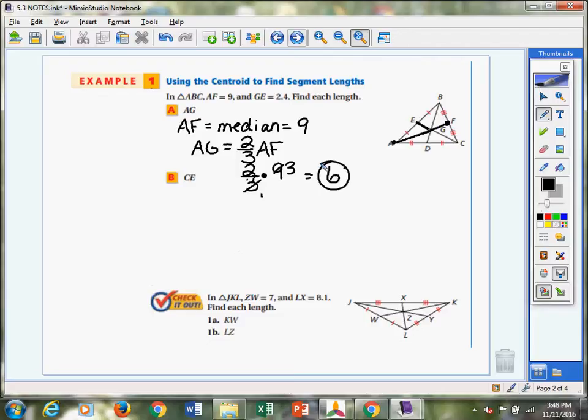Now CE, this time we're going to work backwards just a little bit. We're looking to find the entire median. So in letter A, they gave us the whole median and said, find this piece of the median. And CE is this time, we're trying to find that whole median. We're trying to figure out what's the length of that whole thing if we know one tiny little piece of it. So this is what we know. We know that GE is one-third the size, because that's the smaller piece. GE is one-third the size of the median CE. Well, they gave us GE. They said GE is 2.4.